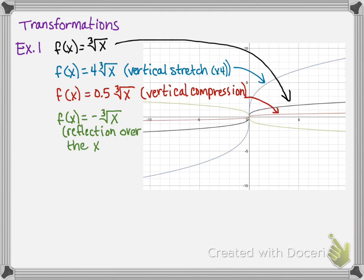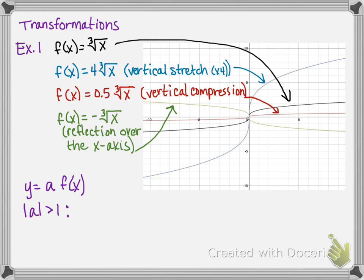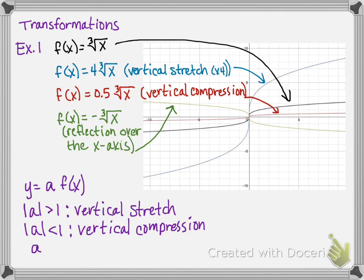And f of x equals negative cube root of x is a reflection over the x-axis, and that is this green graph highlighted here. In general, for y equals a times f of x: if the absolute value of a is greater than 1, then it is a vertical stretch; if the absolute value of a is less than 1, it is a vertical compression; and if a is less than 0, there is a reflection over the x-axis.